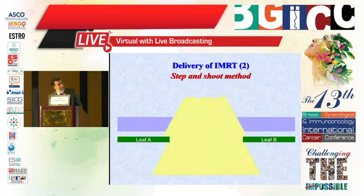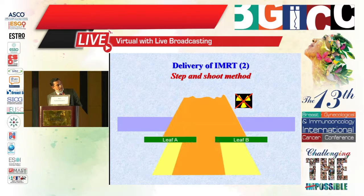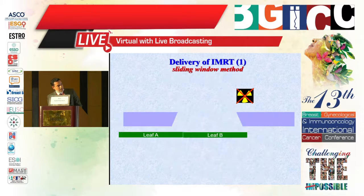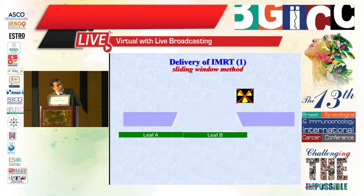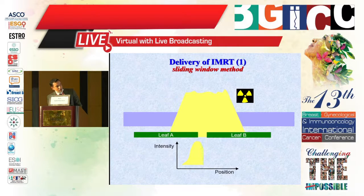Methods of IMRT delivery: the step-and-shoot method, where the radiation turns on and off and the MLC starts and stops at different positions to give the intensity map; and the sliding window method, which depends on continuous MLC motion with continuous radiation.